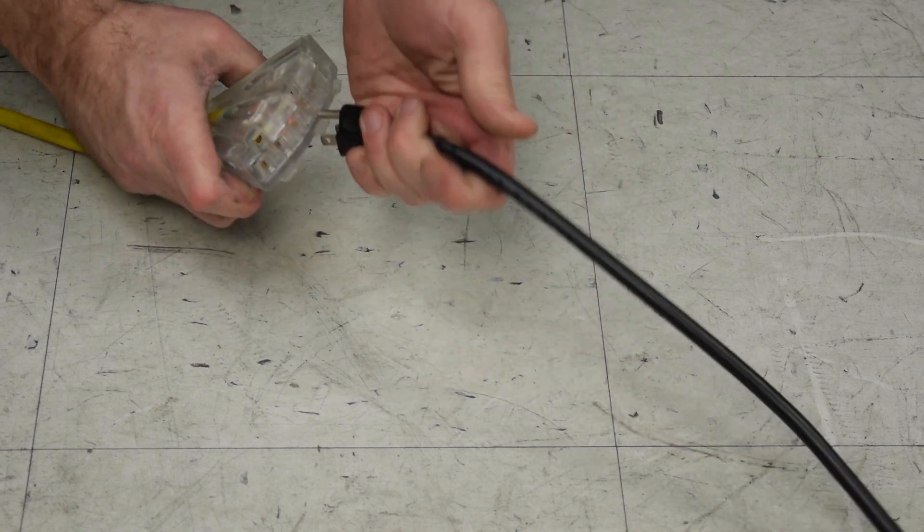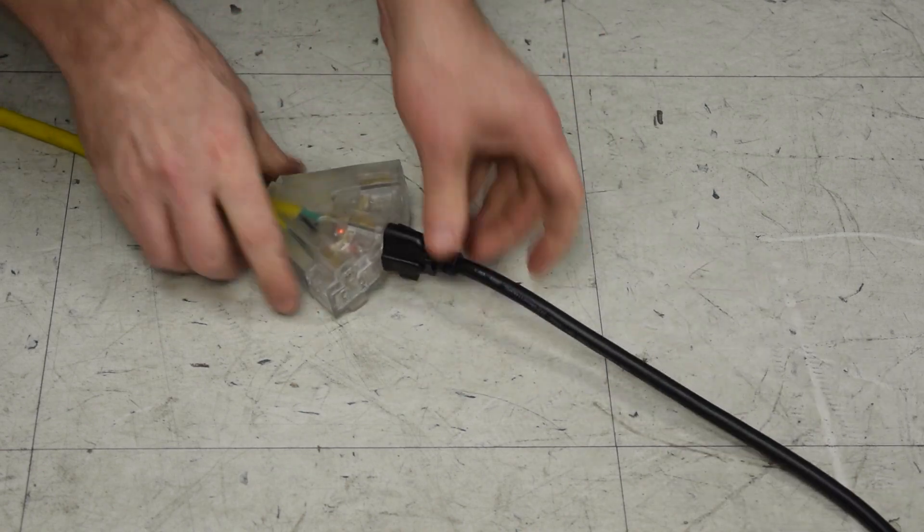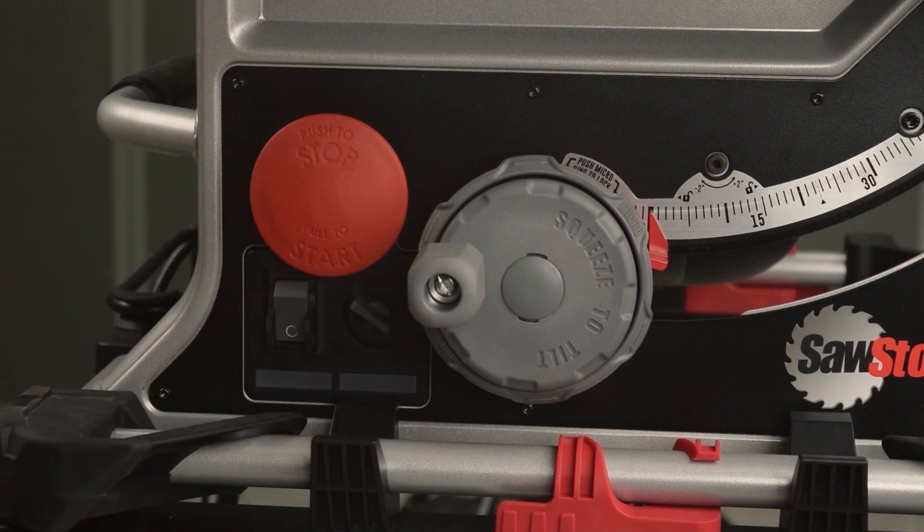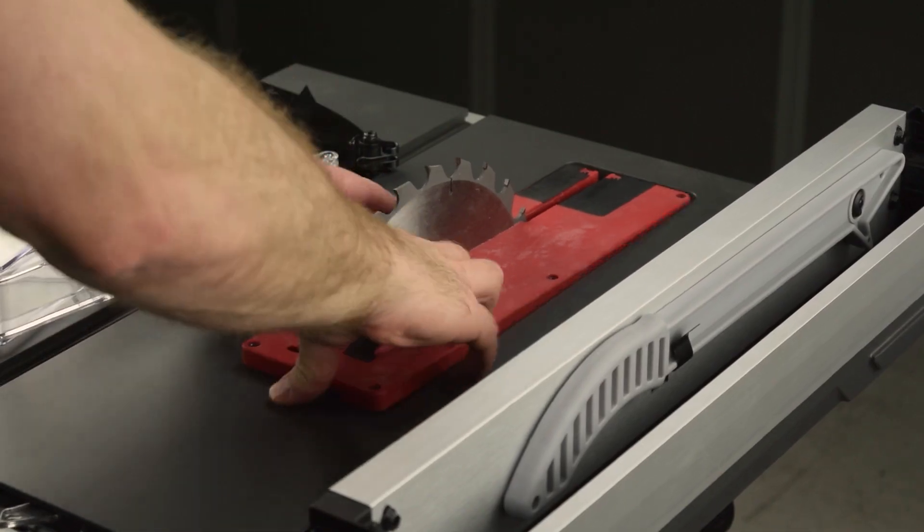Plug in the saw. Unlock the power switch. Install the blade guard and the insert.